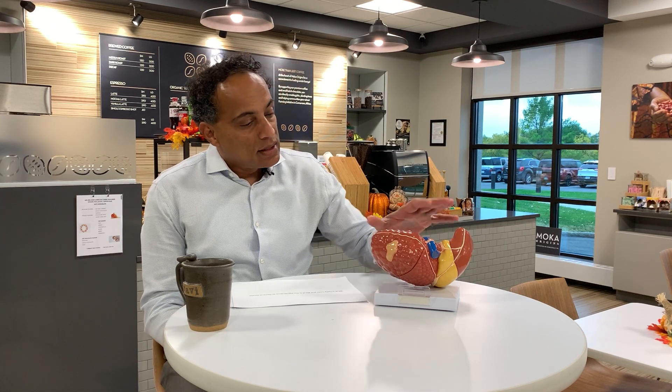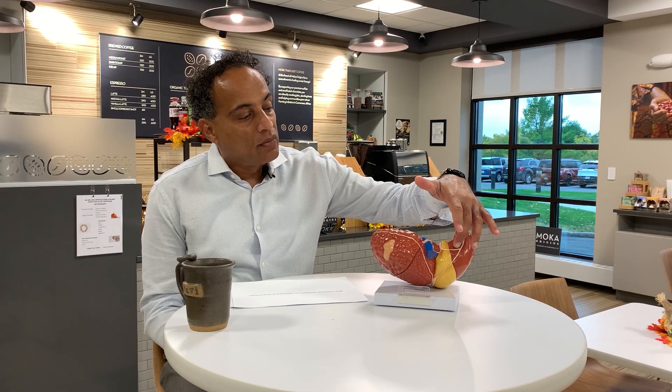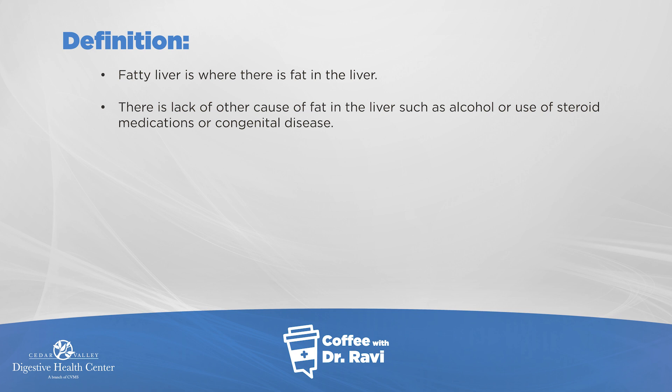Fatty liver is a condition where there's fat in the liver. The liver is an organ that sits up here under the ribcage and helps in digestion, helps in storage of nutrients. This is a model here of a liver. Normal liver looks like this, and in the middle section where you see the yellow, that's how the liver would look if there's fat in it. Fat in the liver is defined as fat without any associated condition like alcohol, congenital diseases, or medications like steroids which also put fat into the liver.